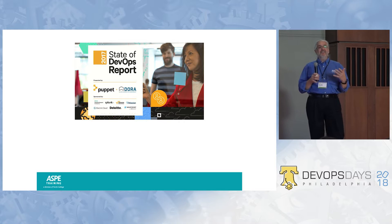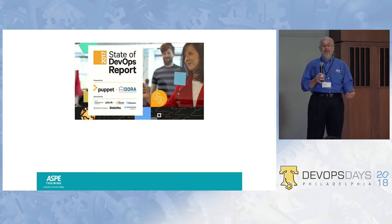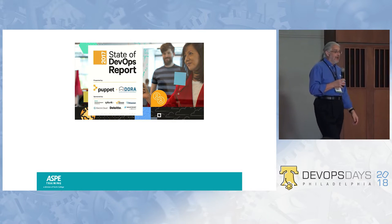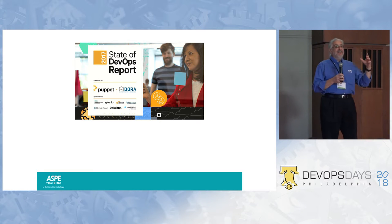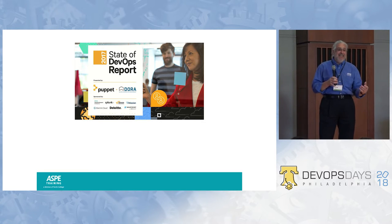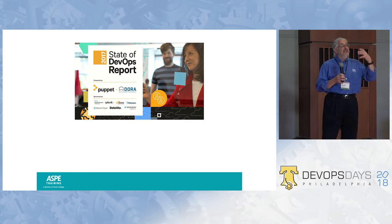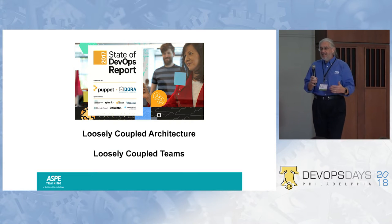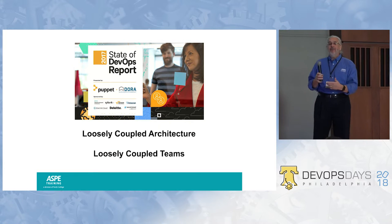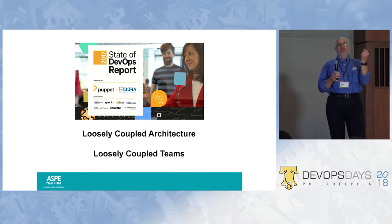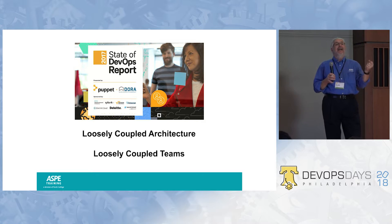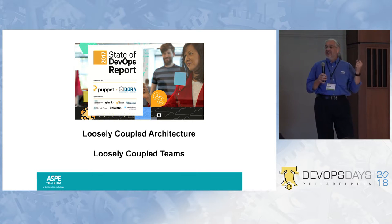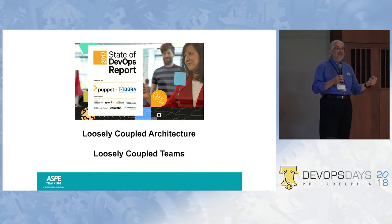This concept of loose coupling was highlighted in the 2017 State of DevOps report. They basically said this is a necessity if we're going to achieve the promise of DevOps — loosely coupled architectures in the way we build our systems, and how we organize our organizations as loosely coupled teams.